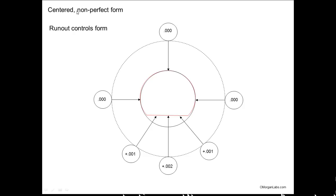You can have a perfectly centered, perfectly circular part, but it could have a defect. Here you can see how runout can control form. The red is a perfect circle with a little divot — a little defect. The dial indicator goes around in a perfect circle and the needle goes out, because it's perfect everywhere else. The largest deviation is 2, so your runout would be 2.